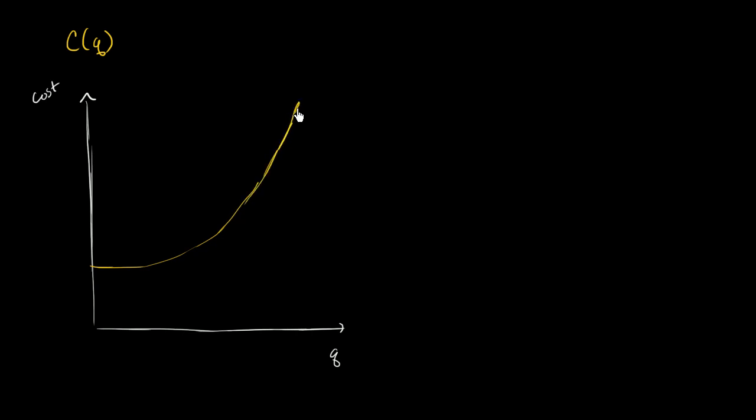My function might look something like this. It seems reasonable to me. Even if I produce nothing, I still have fixed costs. I have to pay rent on the factory. I have to probably pay people even if we produce nothing. And so let's say that fixed cost in the week is $1,000.